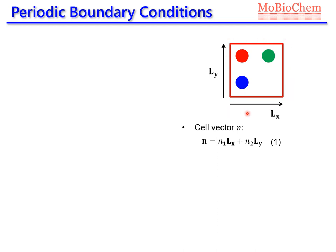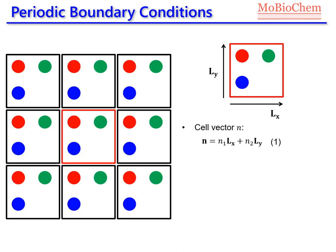The primary cell is defined by two vectors, Lx and Ly. Now we can define a cell vector called n as a linear combination of the dimensions of the primary cell. With these cell vectors, we can define the position of any atom in any other cell of our simulation. For example, if we are in the primary cell, n1 and n2 will be equal to 0, so we have the (0,0) vector to define our primary cell. Here we are talking about two dimensions for simplicity, but in reality we have three dimensions.